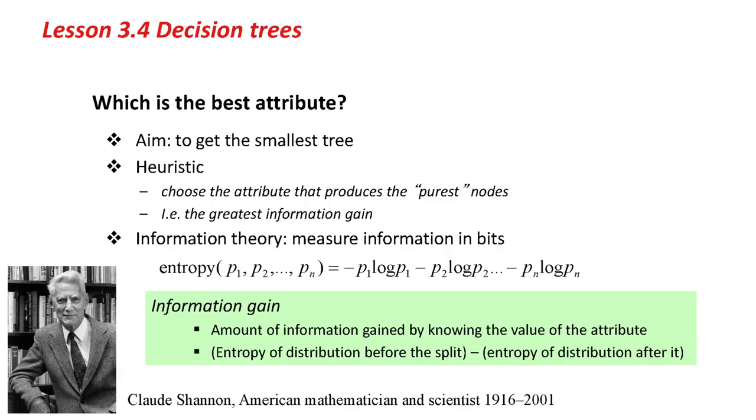The aim is to get the smallest tree. Top-down tree induction methods use some kind of heuristic. The most popular heuristic to produce pure nodes is an information theory-based heuristic. I'm not going to explain information theory to you. That would be another MOOC of its own. Quite an interesting one, actually.